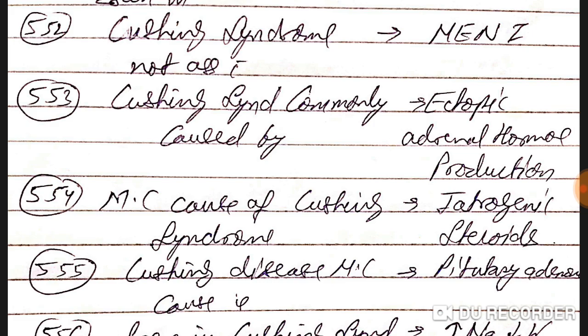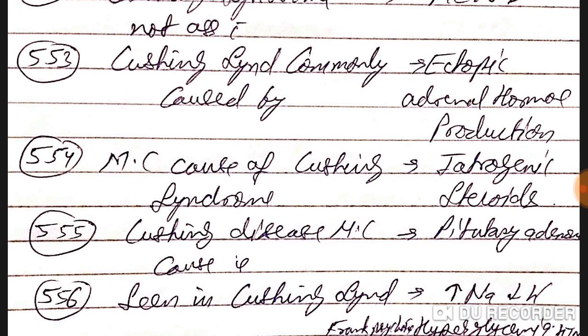MEN1, meaning Multiple Endocrine Neoplasia Type 1, includes pituitary adenoma, parathyroid hyperplasia, and pancreatic tumor.